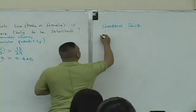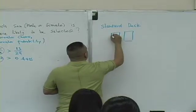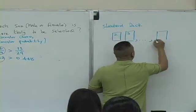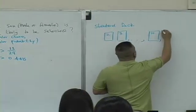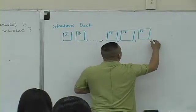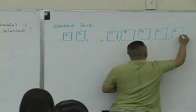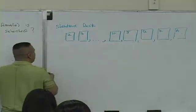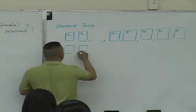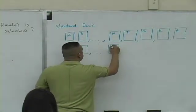A standard deck looks like this: 1, 2, 3, all the way up to 10, then J — which stands for Jack — Q for Queen, K for King, and A for Ace. And in fact, you have four sets of these, called suits. You've got four different suits.